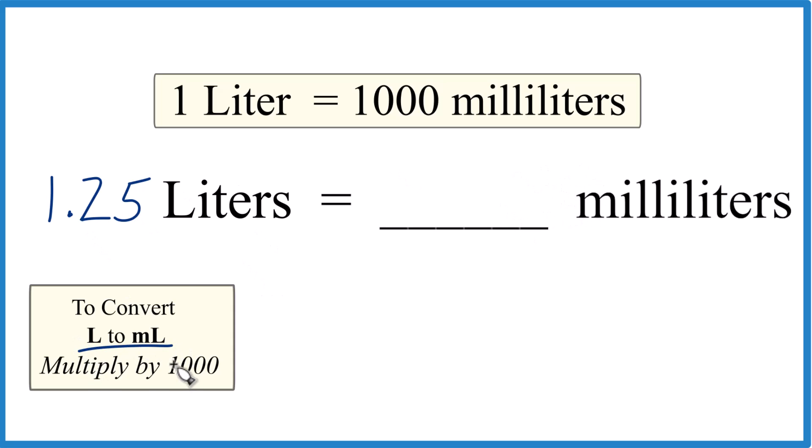When we're going from liters to milliliters, we multiply by 1,000. 1.25 liters, we're going to multiply that times 1,000, and that's 1,000 milliliters in one liter. So we have milliliters over liters.